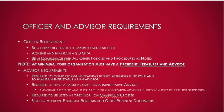From the RSO handbook, here are a few officer and advisor requirements you should be familiar with. Officers must be enrolled matriculating students. All officers must achieve and maintain a 2.3 GPA and be in compliance with all policies and procedures. At minimum, your organization must have a president, treasurer, and an advisor. Advisors are required to complete online training before assuming their role. They must be faculty, staff, or administrative advisors. Graduate assistants may serve as advisors if listed as a duty on their job description. They must be listed as advisor on your organization's Campus Link roster and must sign or approve financial requests and other pertinent documents.